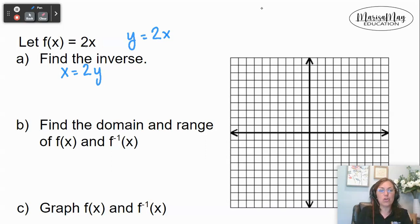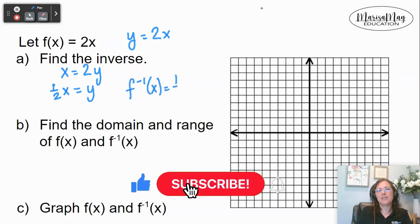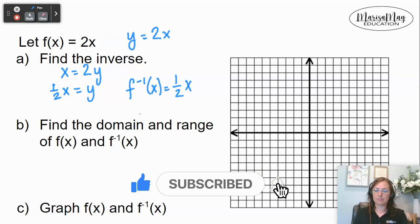Now we solve for the new y. So I'm going to divide by 2 on both sides. That gives me one half x. Now I'm going to go back to inverse notation, which tells me that f inverse of x equals one half x.